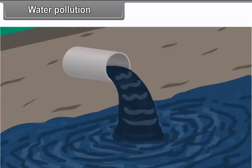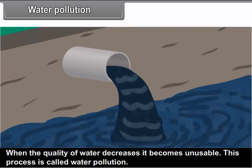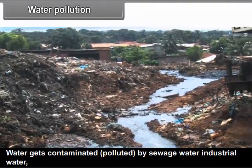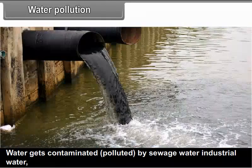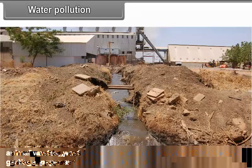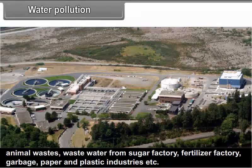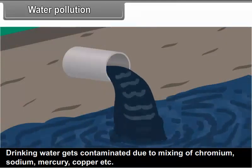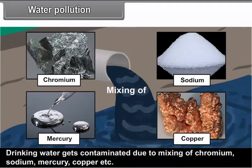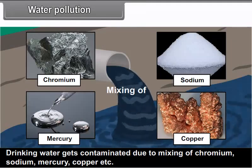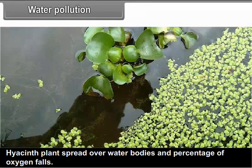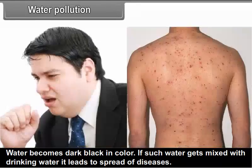Water Pollution: When the quality of water decreases, it becomes unusable — this process is called water pollution. Water gets contaminated by sewage water, industrial water, animal wastes, wastewater from sugar factories, fertilizer factories, garbage, paper and plastic industries, etc. Drinking water gets contaminated due to the mixing of chromium, sodium, mercury, copper, etc. Hyacinth plants spread over water bodies and the percentage of oxygen falls, making water dark black in color. If such water gets mixed with drinking water, it leads to the spread of diseases.